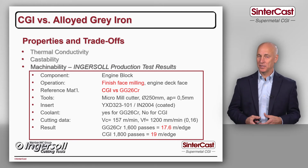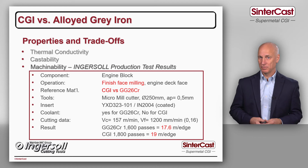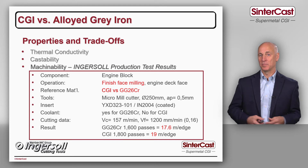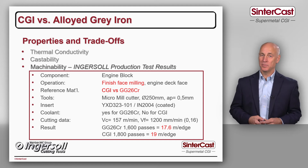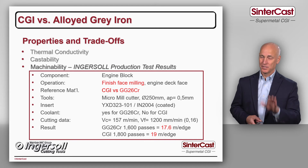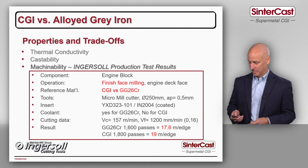CGI can be better because it's a more narrowly defined material, and it allows the machining operation to be set up and optimized. Frequently the machining people will say: we don't care what you give us, just give us the same thing every day. And that's what CGI does.